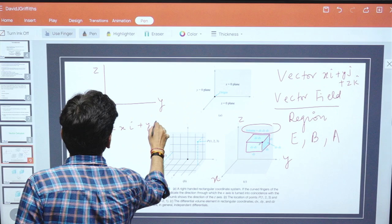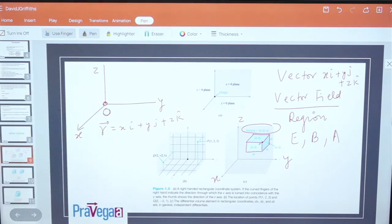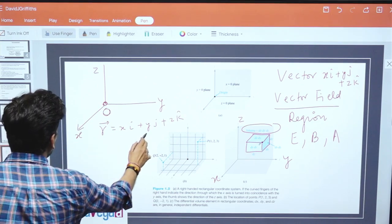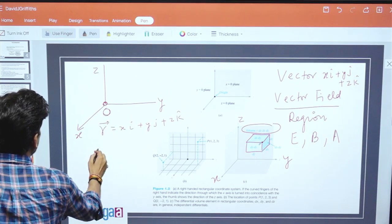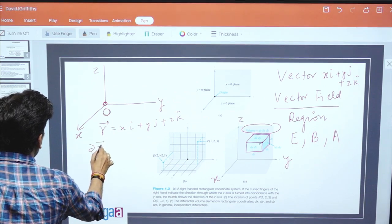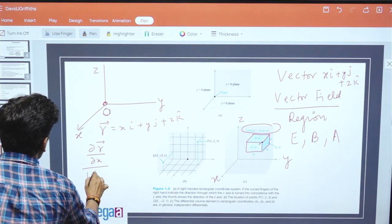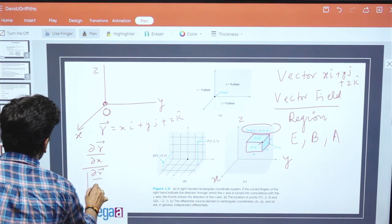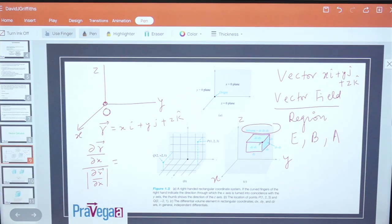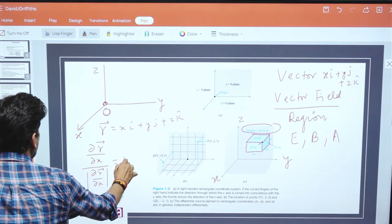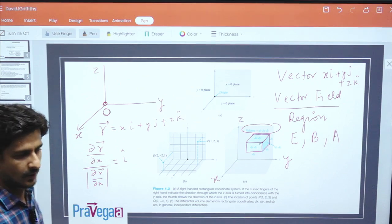The next thing is very important: suppose you have this vector r which is x i-cap plus y j-cap plus z k-cap. Then how will you write the unit vector? You should do it like this: dr by dx upon magnitude of dr by dx. This will come out to be i-cap, and similarly j-cap and k-cap.